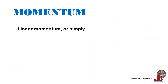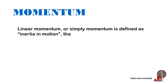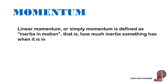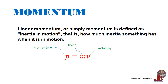Therefore, we can define momentum as mass in motion with the formula: momentum is equal to mass multiplied by velocity, or p is equal to m times v. The unit for mass is kilograms and velocity is taken as meters per second, so momentum is kilogram meter per second.